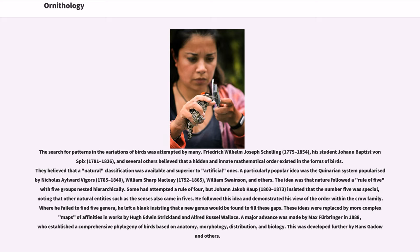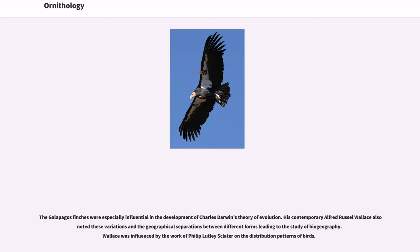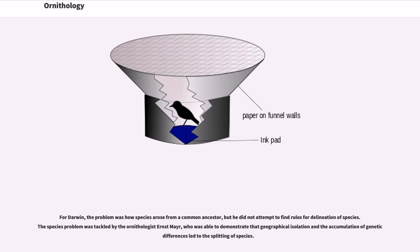These ideas were replaced by more complex maps of affinities and works by Hugh Edwin Strickland and Alfred Russell Wallace. A major advance was made by Max Fürbringer in 1888, who established a comprehensive phylogeny of birds based on anatomy, morphology, distribution, and biology, developed further by Hans Gadow and others. The Galapagos finches were especially influential in the development of Charles Darwin's theory of evolution. Alfred Russell Wallace also noted variations and geographical separations between different forms, leading to the study of biogeography. The species problem was tackled by the ornithologist Ernst Mayr, who demonstrated that geographical isolation and the accumulation of genetic differences led to the splitting of species.